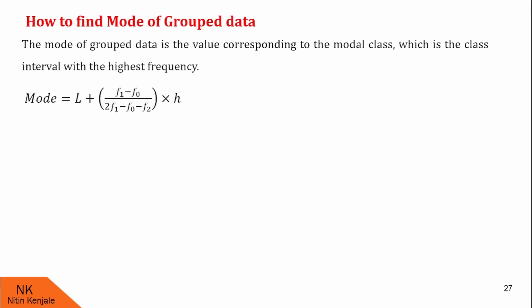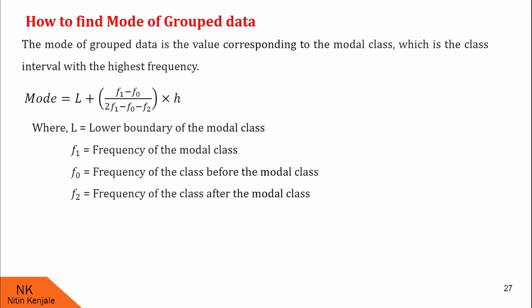Therefore, formula for the mode is given by L plus F1 minus F0 upon two times F1 minus F0 minus F2 into H, where L is the lower boundary of the modal class, F1 is the frequency of the modal class, F0 is the frequency of the class before modal class, F2 is the frequency of the class after modal class, and H is class width.